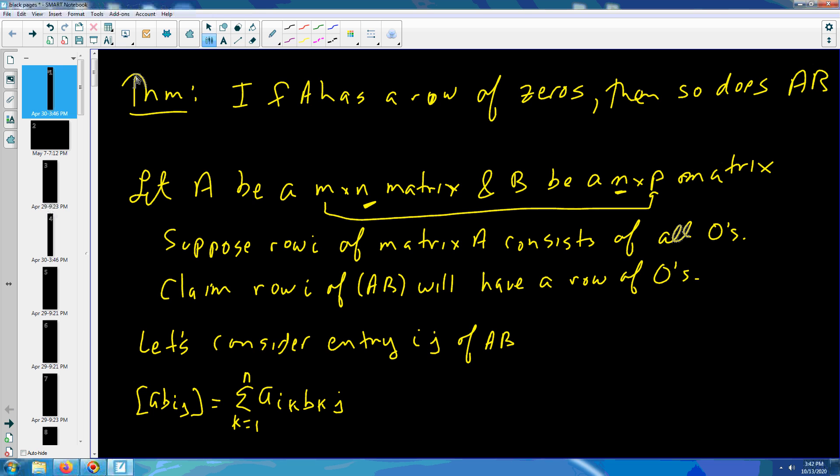Now if row i has a row of zeros, then a_ir is equal to zero for all r.